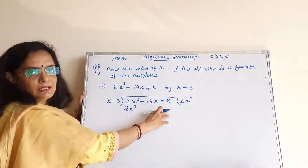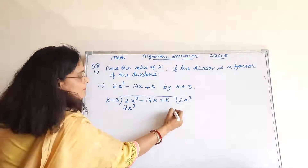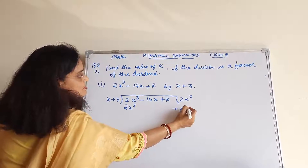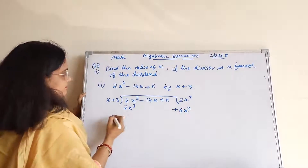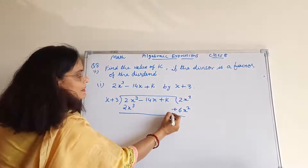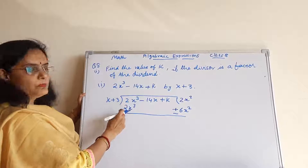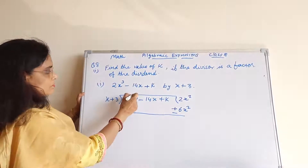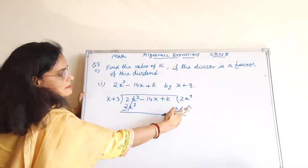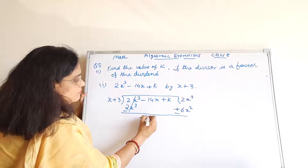Ab yahan pe X square toh kahin nahin hai, toh hum yahan likhenge plus 6X square — 3 twos are 6 and X square. Ab sign change karenge: plus 2X cube minus 2X cube, it gets cancelled. Yahan pe plus 6X square tha, iska sign change hoke minus ho jaega.